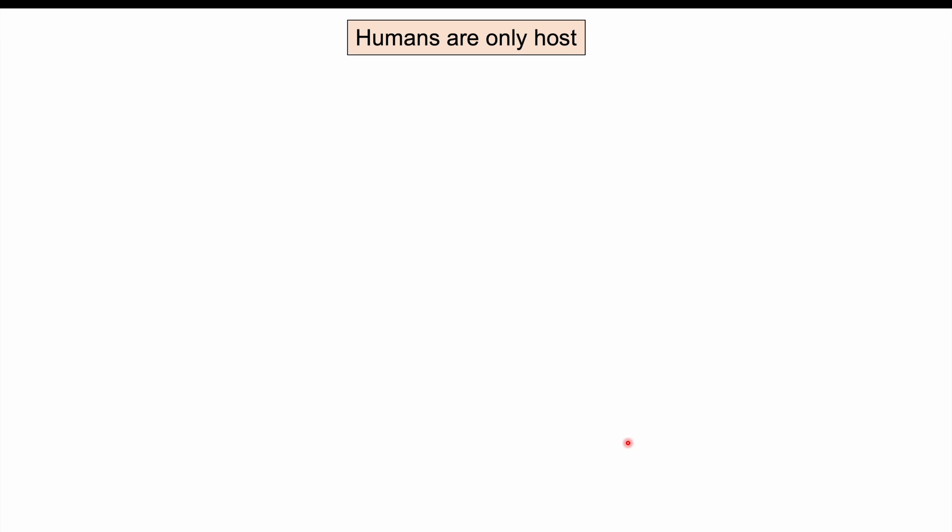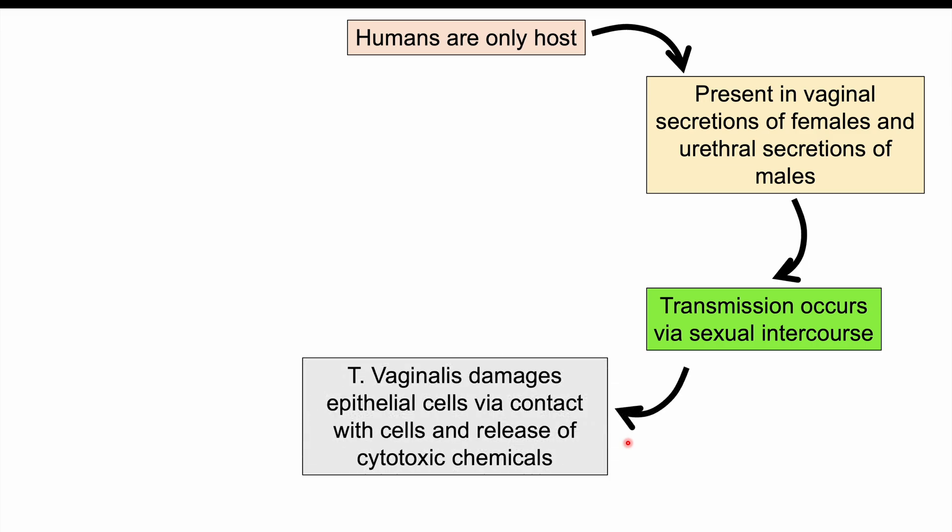Humans are the only host for Trichomonas vaginalis, so they're not found in other species. They're present in vaginal secretions of females and urethral and prostatic secretions of males, and transmission occurs via sexual intercourse. When an individual contracts this organism, the Trichomonas vaginalis damages epithelial cells via direct contact and release of cytotoxic chemicals, damaging the vaginal lining and parts of the urethra, which explains the increased risk of co-infection with other STIs.